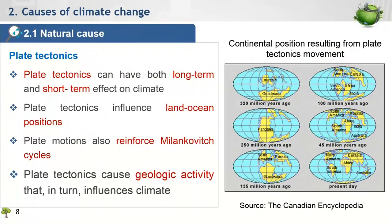Plate tectonics is the term used to describe the movement of the continents and the processes that cause those movements. Such movement can have both long-term and short-term effects on the earth's climate system. Because plate tectonics determines the shape and size of the continents and ocean basins, it strongly influences the regional and global climate pattern, given that the relative position of the continents and ocean can affect atmospheric and ocean circulation. When all continents are joined together into one supercontinent as they were 250 million years ago, most of the land area is far from the ocean, so the continent is dominated by a very harsh continental climate. But when the continents are separated as they are today, ocean currents are better able to distribute heat throughout the globe, resulting in less extreme global and regional climate.